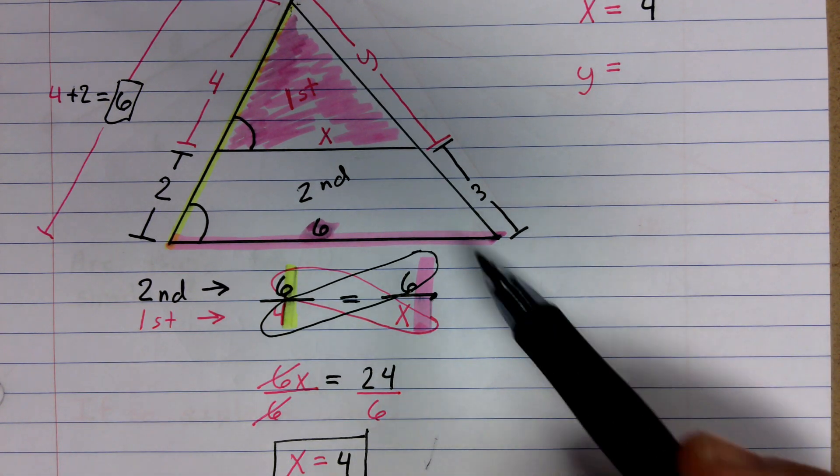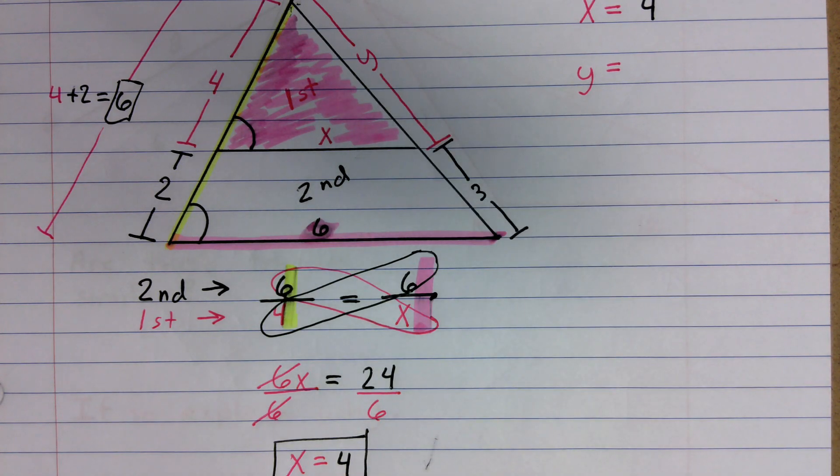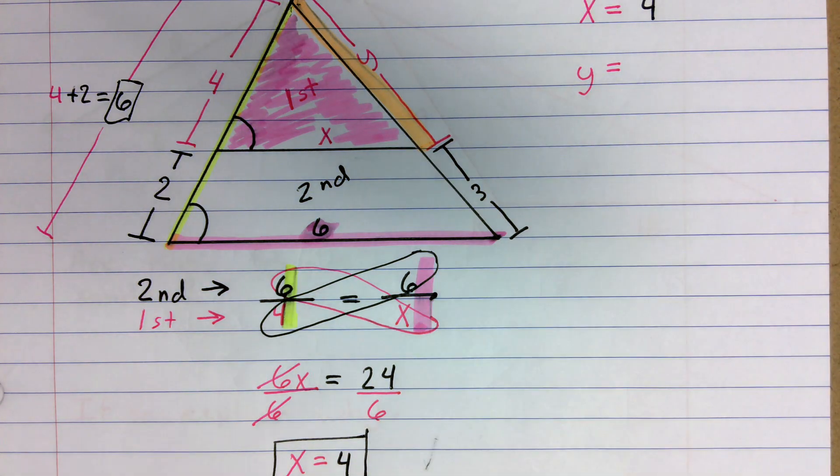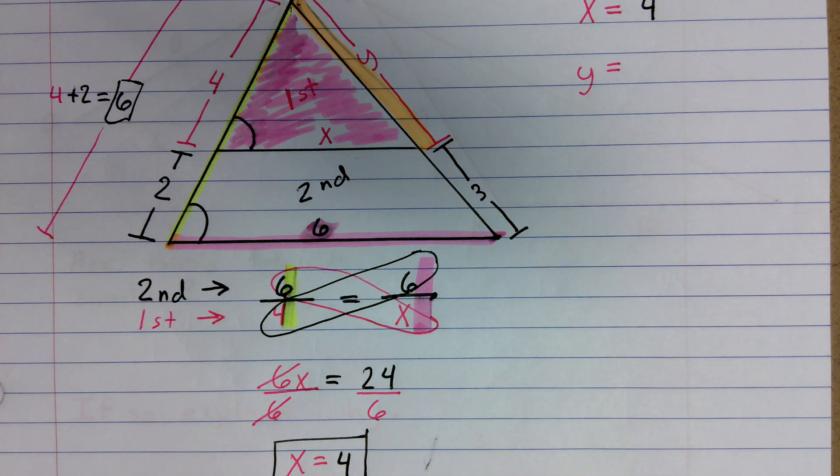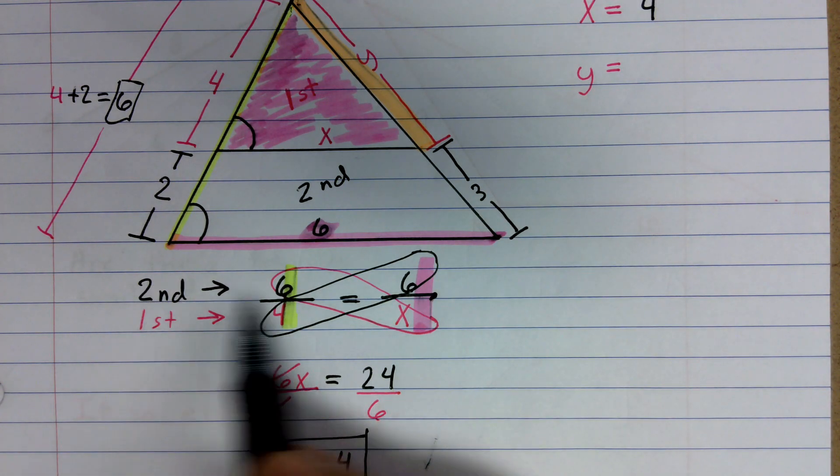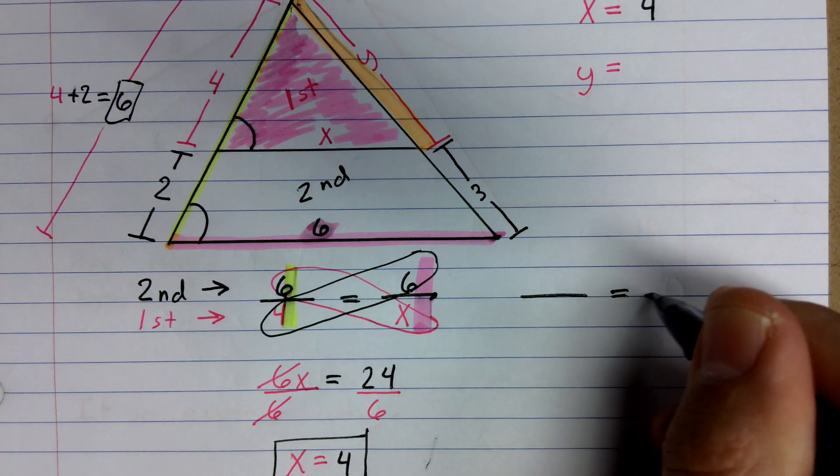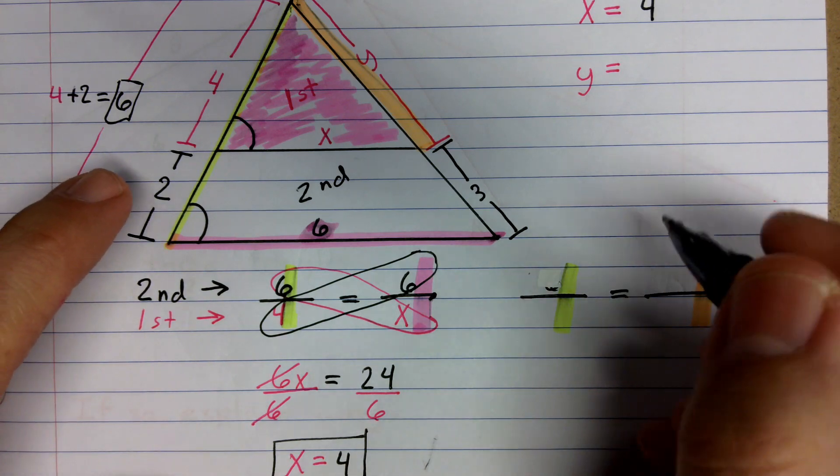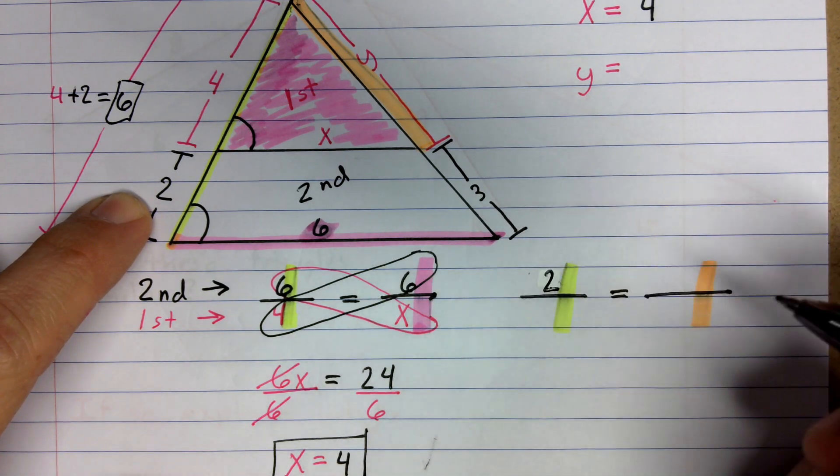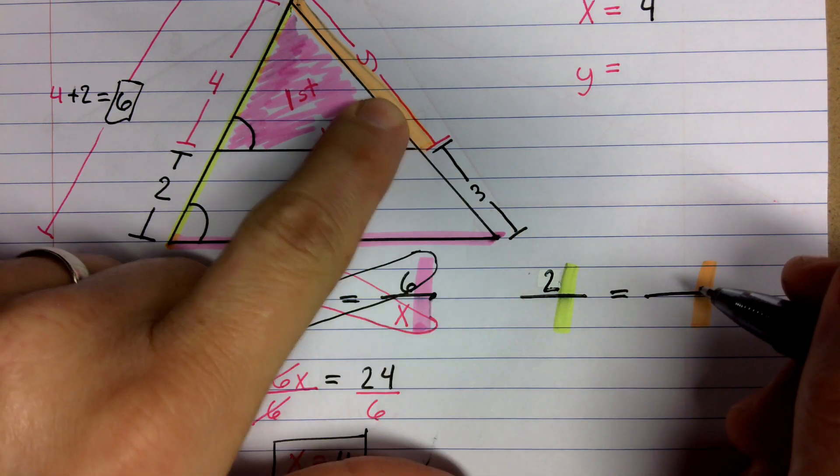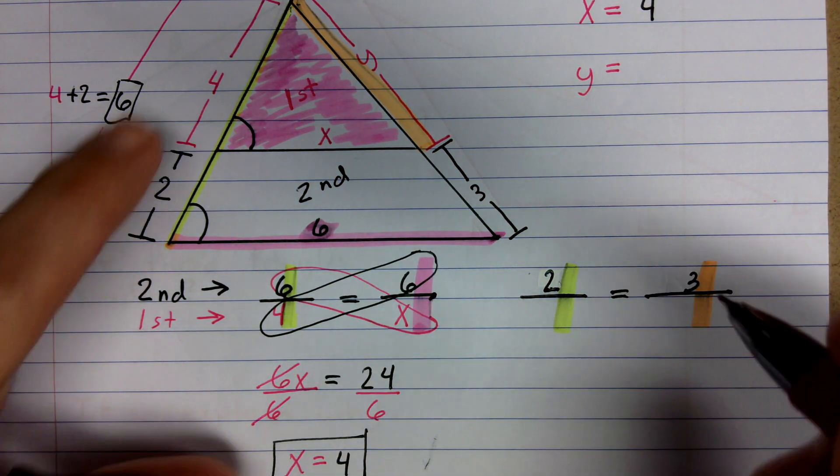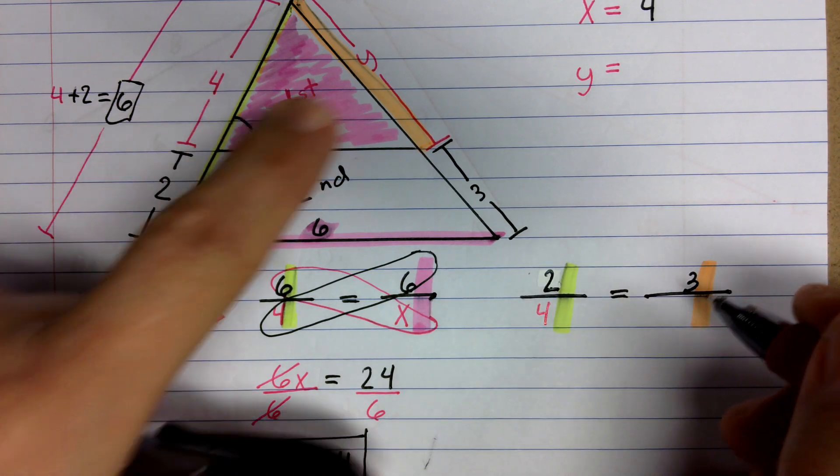Now we still have another variable we've got to solve for. We've got to solve for this y. So I'm going to go ahead and we're going to set that one up as well. So I am going to highlight this side orange, make it a different color. So we're looking at y. And we'll go ahead and keep the same thing. I'll do everything for the second shape in my numerator this time, and everything for the first shape in my denominator. So on my second shape, I'm going to go ahead and say 2 for my yellow. And then on the orange side, I have a 3. And then for my first shape, I have a 4. And then I have a y.